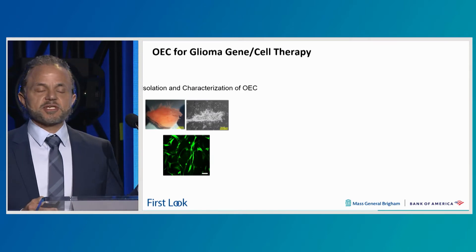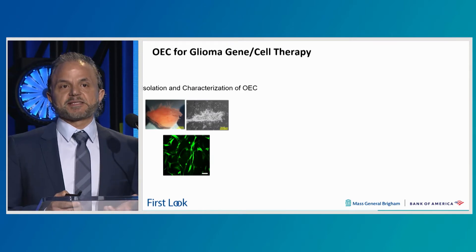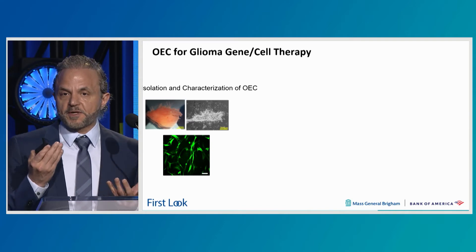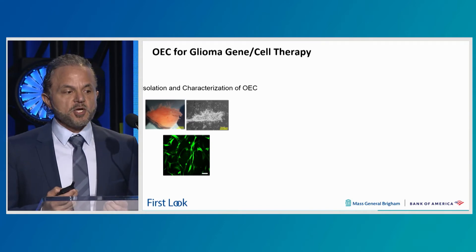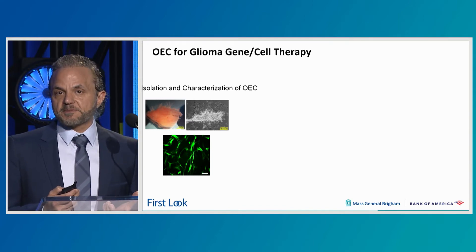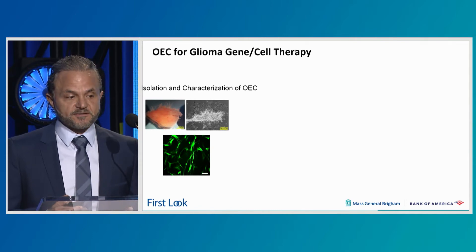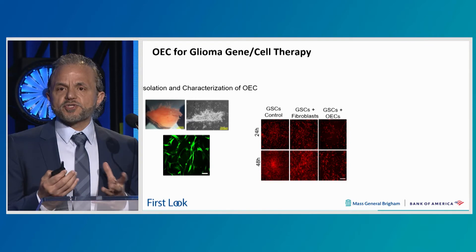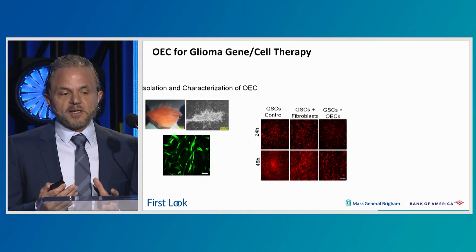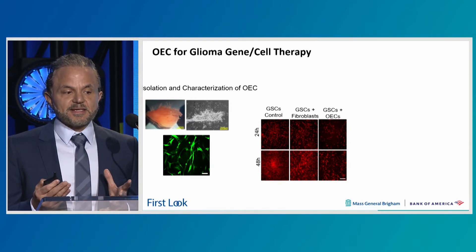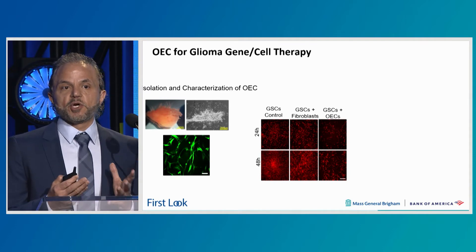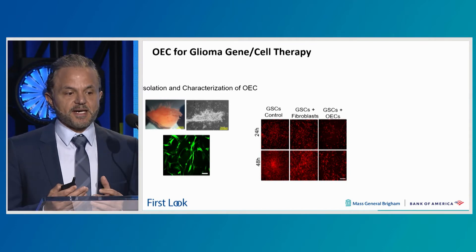So we thought by looking at their normal roles in the brain, we can apply them for glioma therapies. The challenge with OECs was the isolation and optimization. Even though people have used them, you can obtain them from different areas of the olfactory mucosa. We have a protocol optimized in the lab where we can get more than 99% purity of these cells. The first thing we did: when you co-culture these OECs with glioma stem cells, we can see easily that they inhibit glioma stem cell growth, as you see on the slides here.